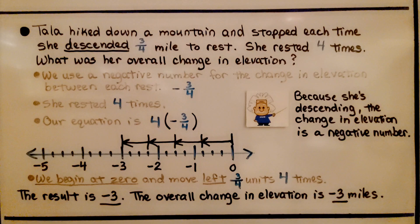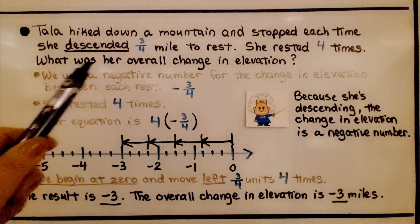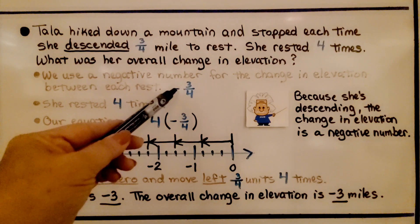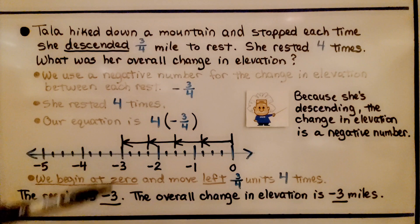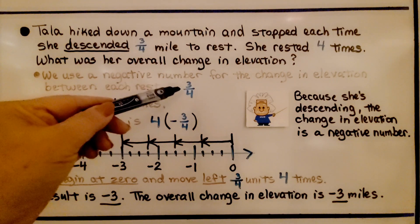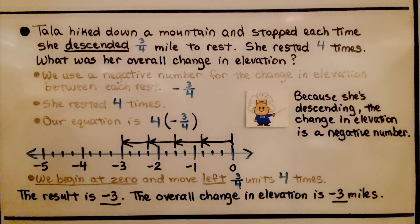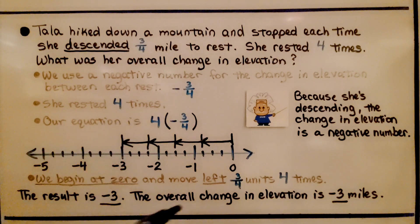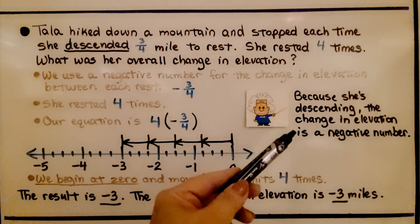Here's our first example. Tala hiked down a mountain and stopped each time she descended three-fourths mile to rest. She rested four times. What was her overall change in elevation? We're looking for her overall change in elevation from where she started to where she finished. We use a negative number for the change in elevation between each rest — negative three-fourths — because she's coming down the mountain three-fourths mile each time. She does that four times, so our equation is four times negative three-fourths. Because she's descending, the change in elevation is a negative number.